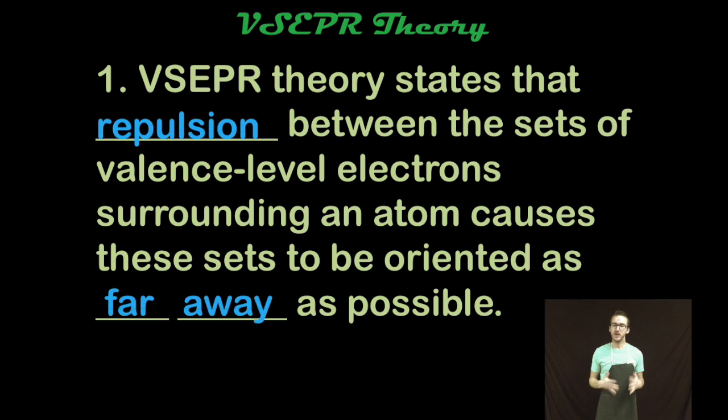Now a couple of things to think about when it comes to VSEPR theory. Recognize that the repulsion between the sets of valence level electrons surrounding an atom causes those sets to be oriented as far away as possible. So those valence electron pairs are trying to get as far away from the other valence electron pairs as possible. Again, like charges don't want to hang out in the same space.